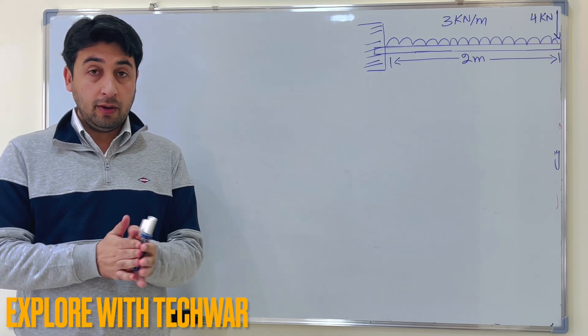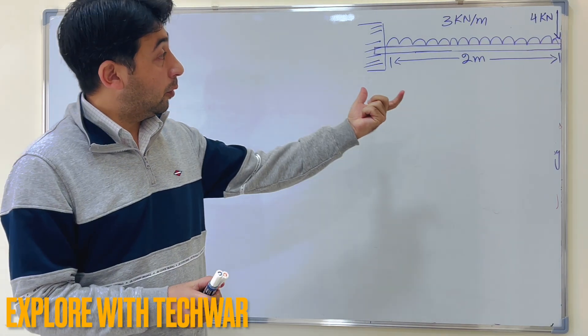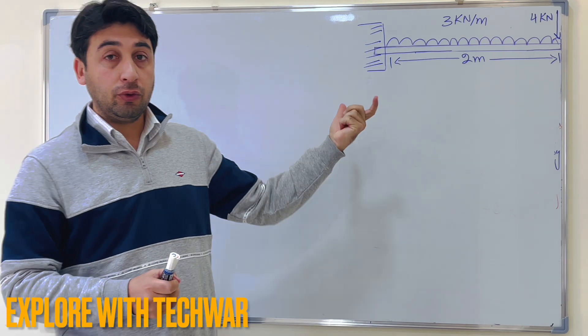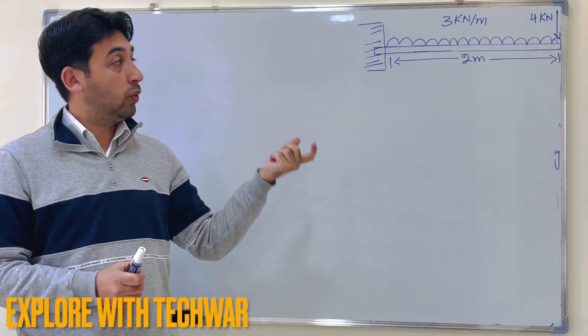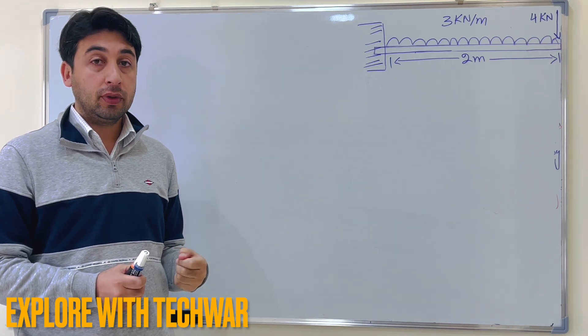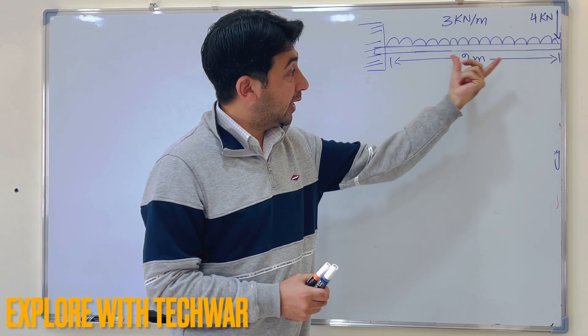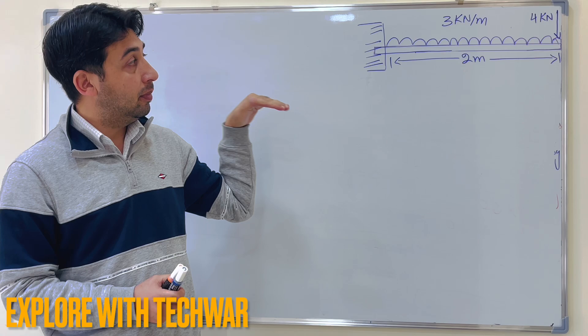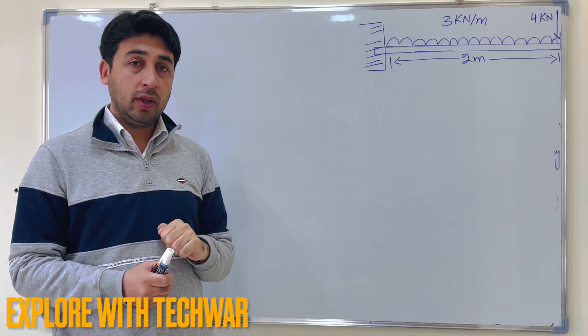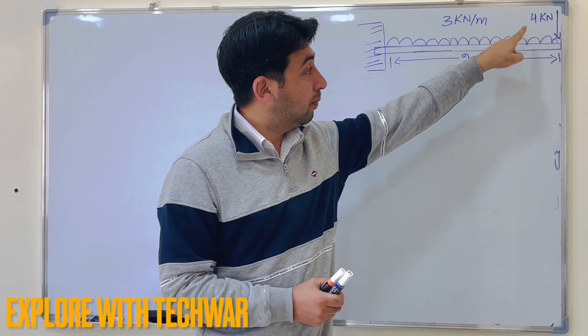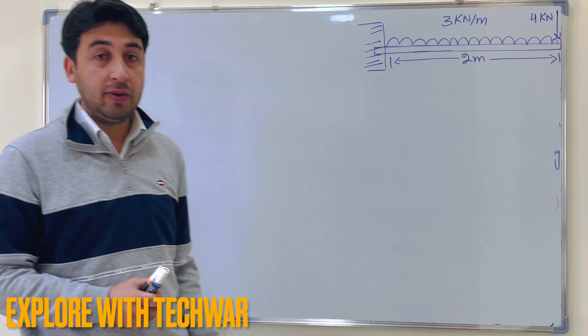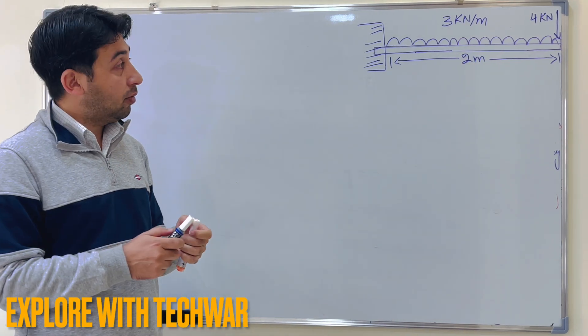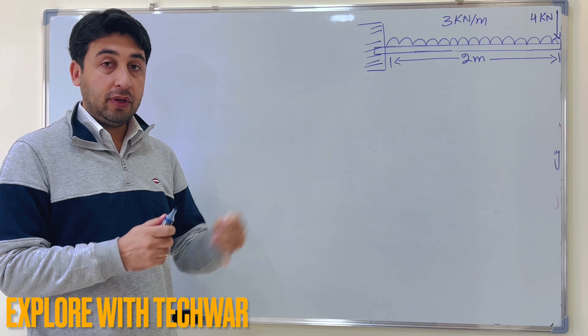Hello everyone, I hope everyone is doing well. In this video we will solve a problem for the reaction forces of a cantilever beam with uniformly distributed load. So here what we have, we have a cantilever beam with uniformly distributed load throughout the beam, 3 kN per meter, and it has a point load of 4 kN at the tip of the beam. So we will solve for the reaction of the beam.